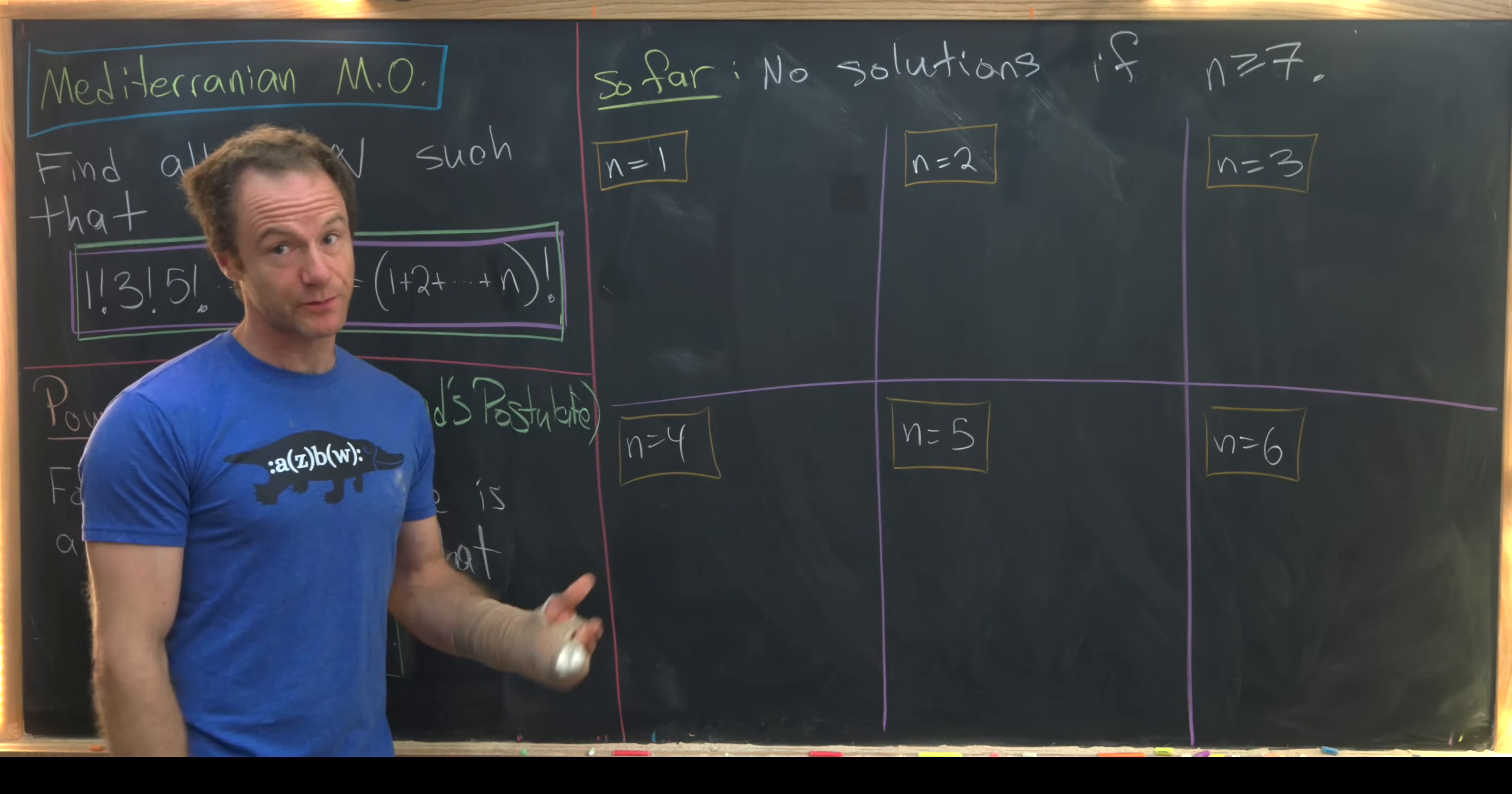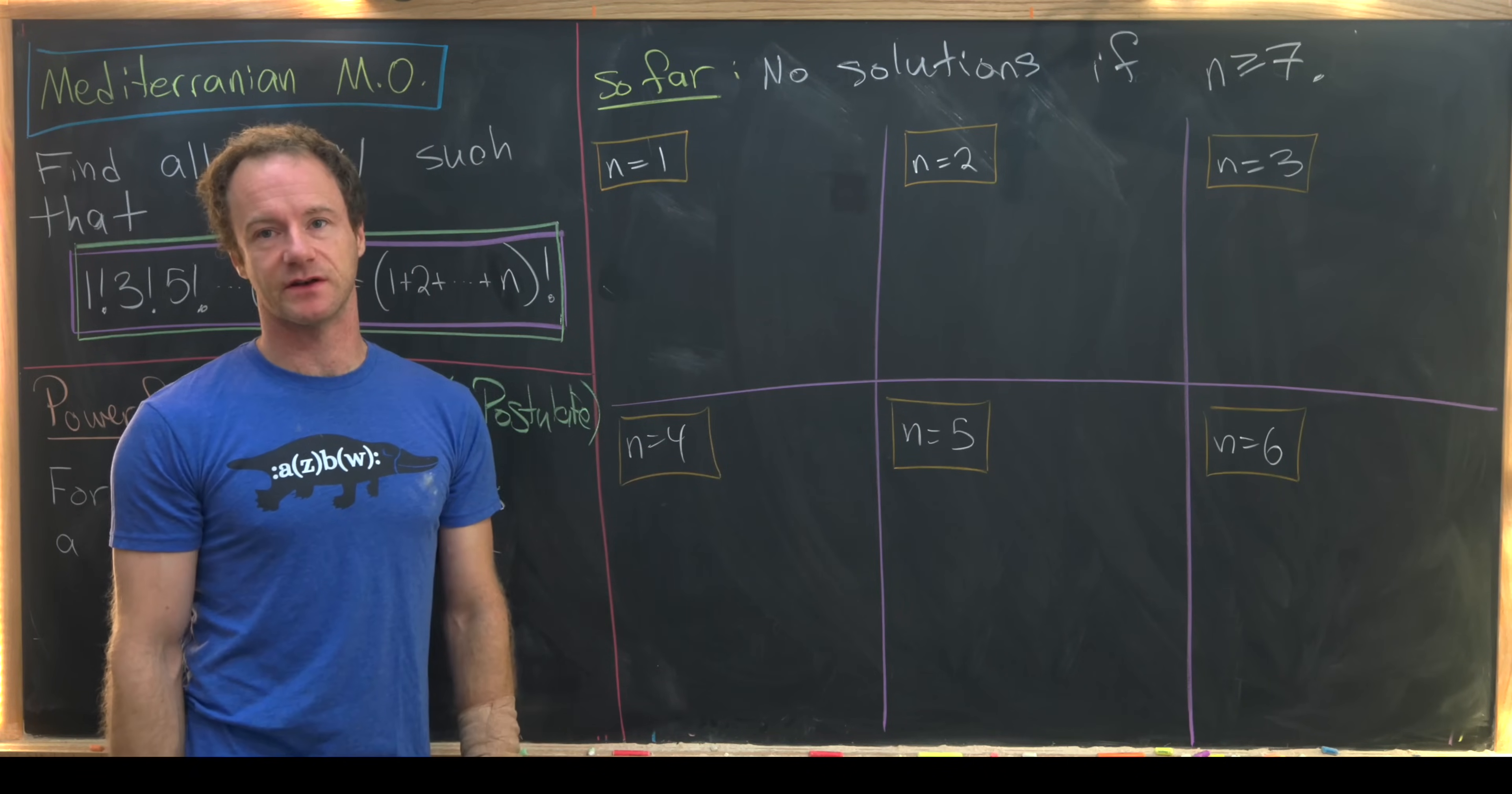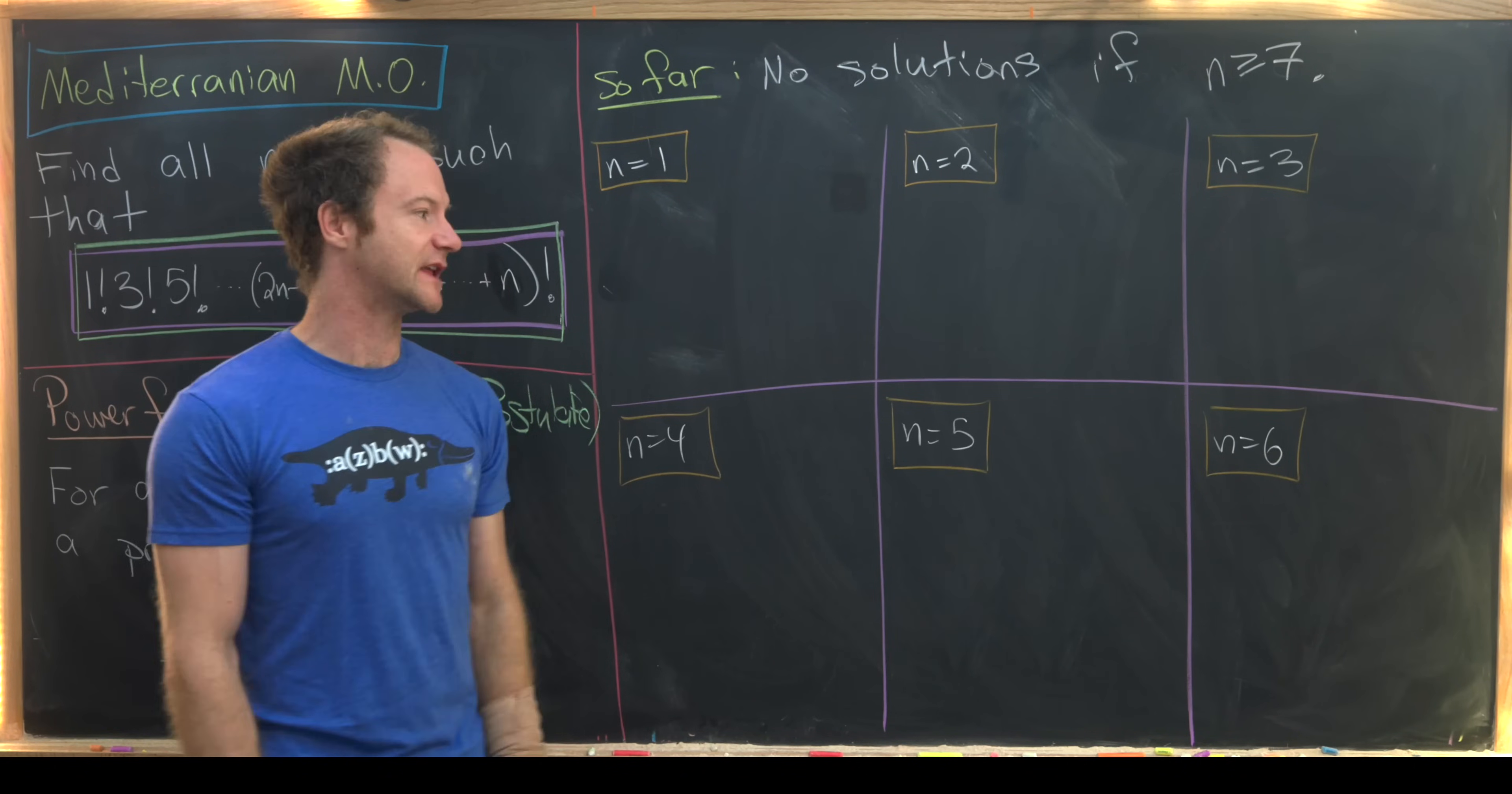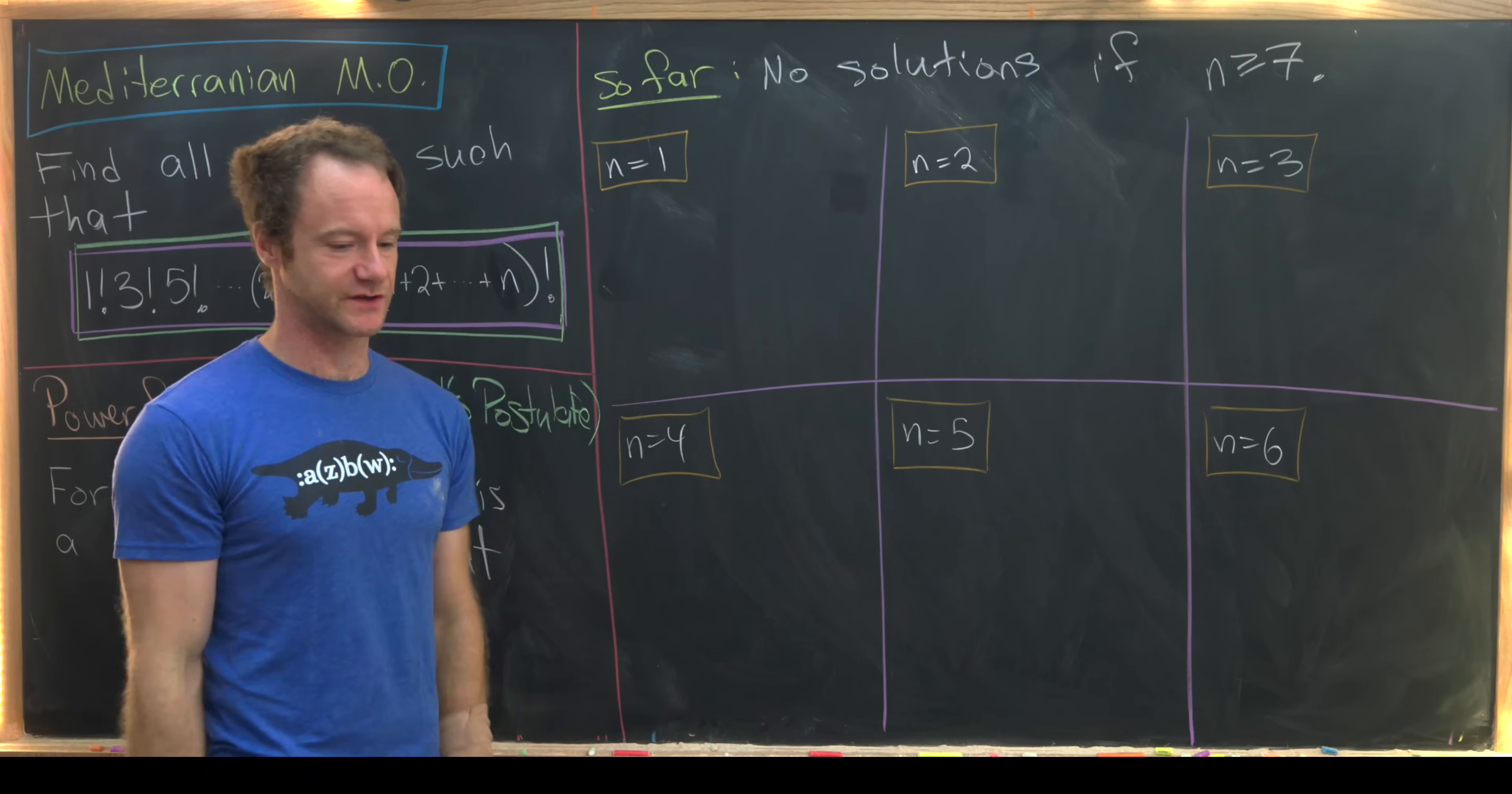On the last board we had a pretty cool argument showing that there are no solutions to our proposed equation when n is bigger than or equal to 7. So from that it clearly follows that the only possible solutions occur when n is between 1 and 6. So now we're going to look at each of those in a case-by-case basis, and to be honest we'll probably only look at a couple and I'll leave the rest as homework exercises for you.